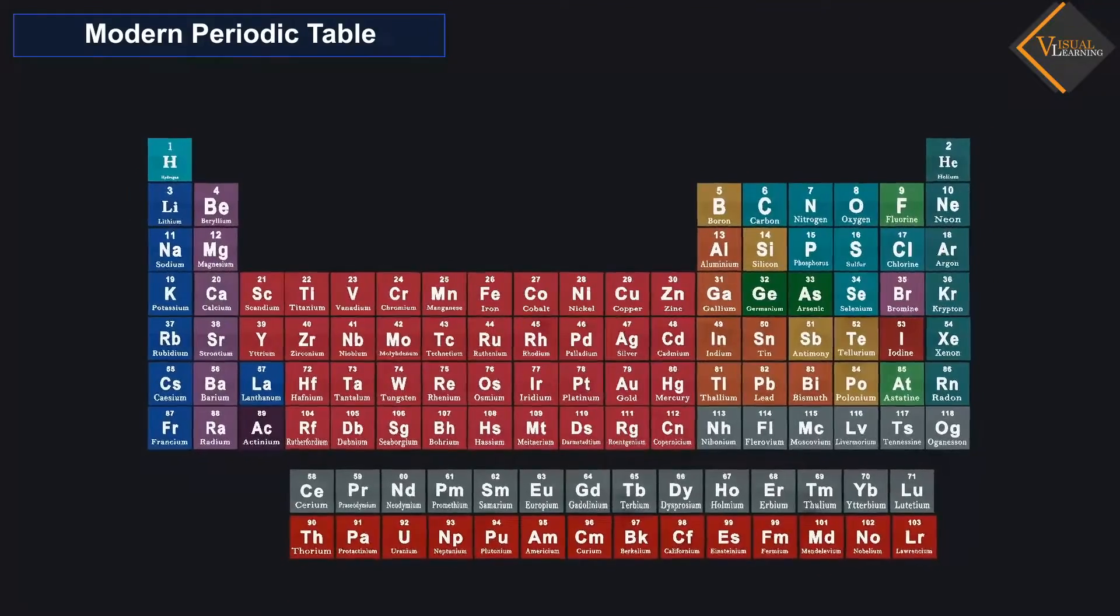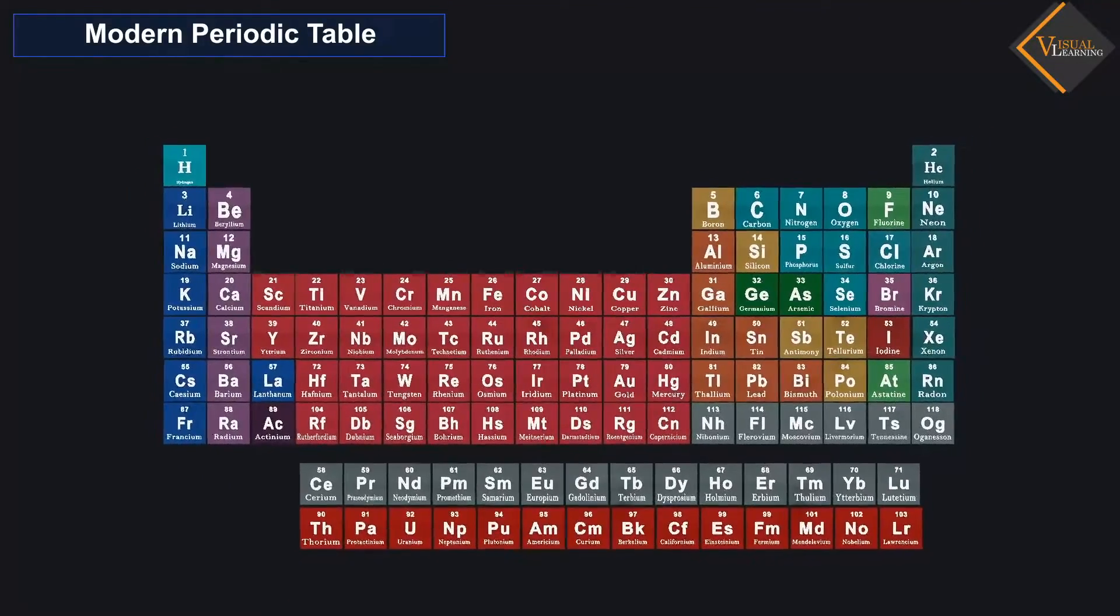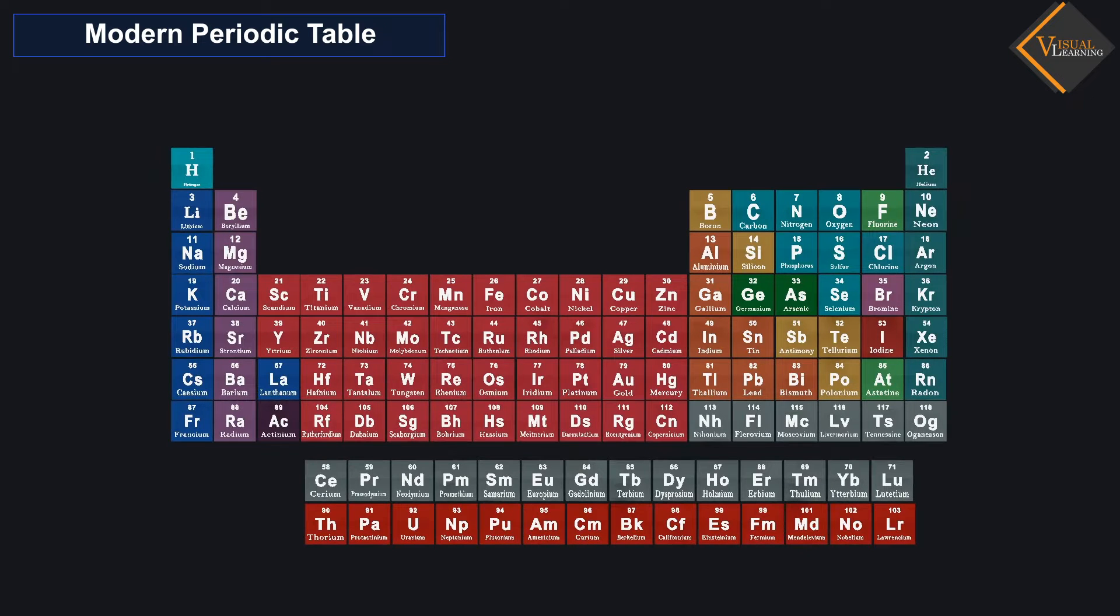Elements, when arranged in order of increasing atomic number, lead us to the classification known as the Modern Periodic Table.